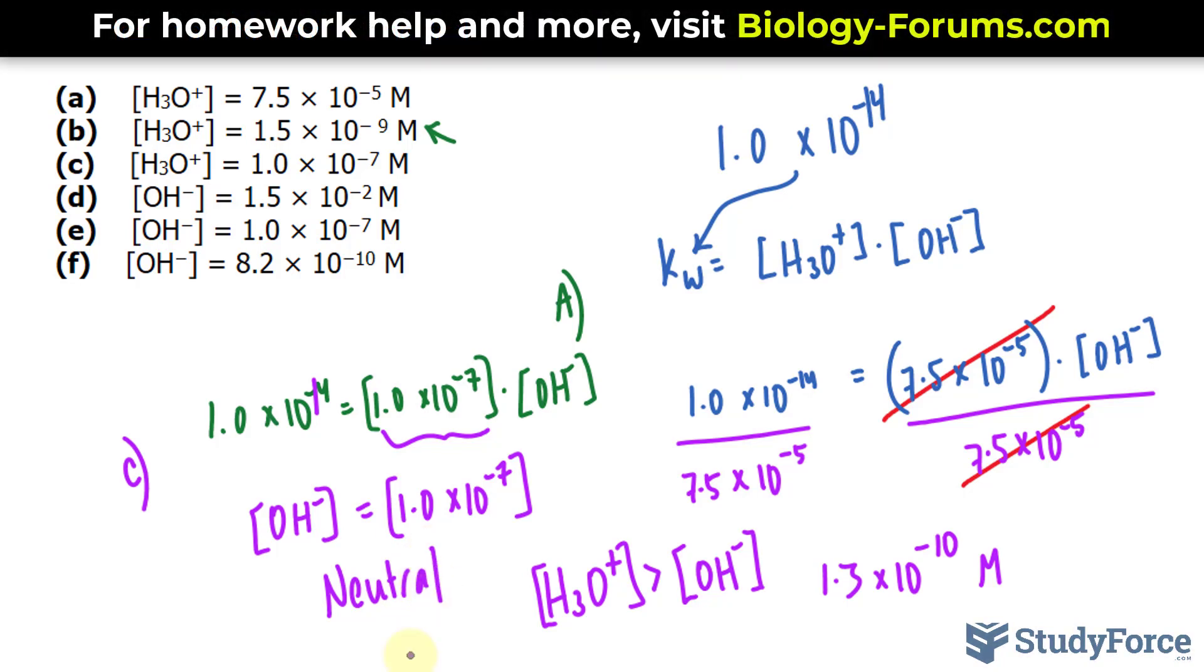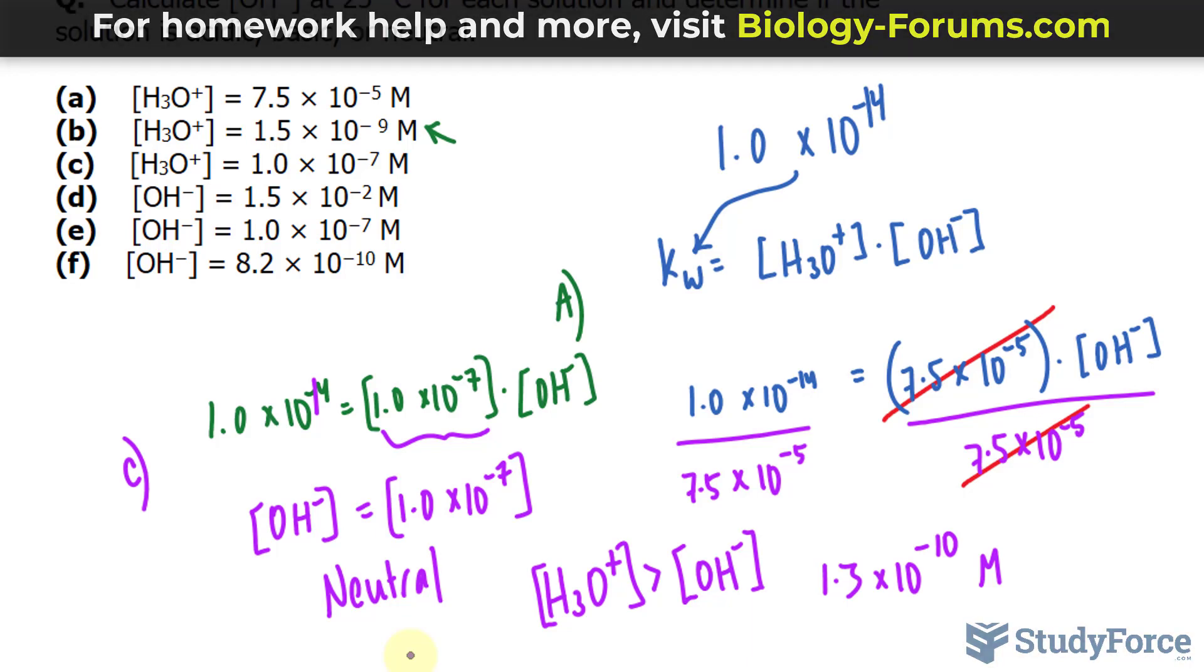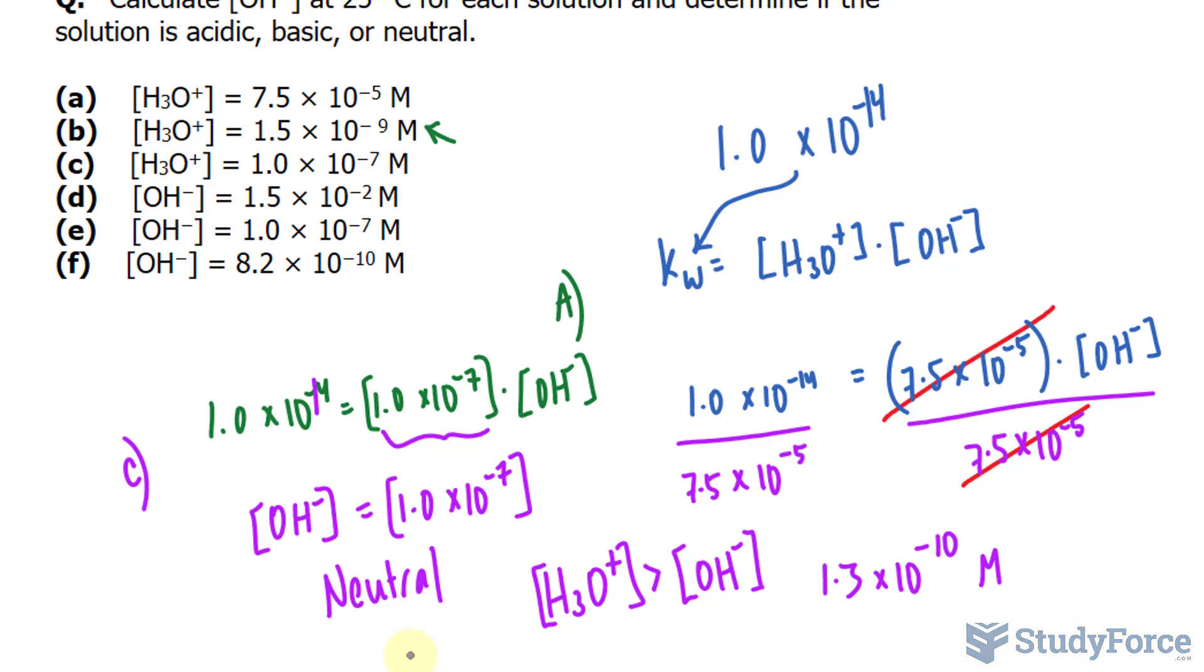Notice that in questions D, E, and F, they give us the concentration of OH-. Now rather than going through all the calculations here, I'll just run you through what you should do. This time you should substitute each of these numbers for each question into here, and you'll use the same Kw because it's the constant.